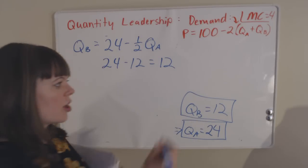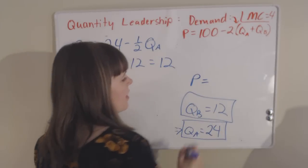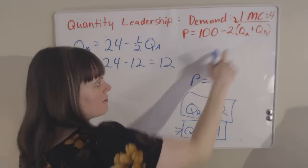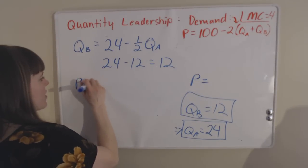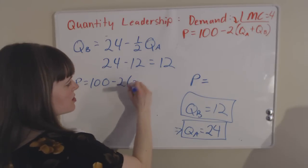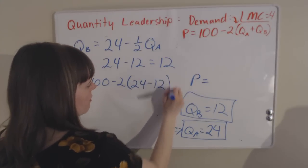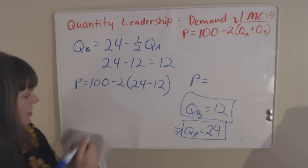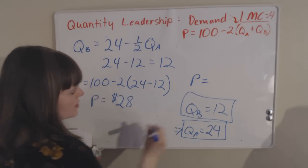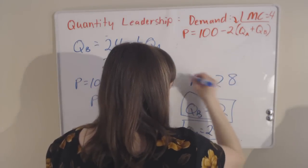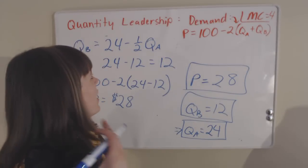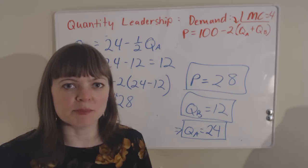Now all we need to know is the price in the industry. We find that by plugging our QA and QB into our demand function. So price equals 100 minus 2 times the total industry quantity, which is 24 plus 12. And so the price in this industry is actually going to be $28. And that was a fully solved quantity leadership oligopoly problem.